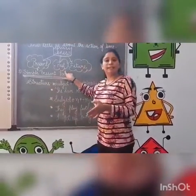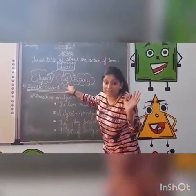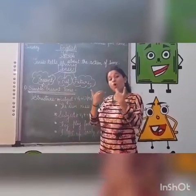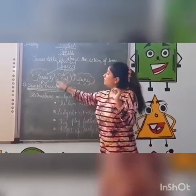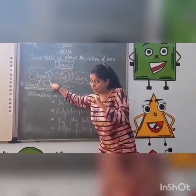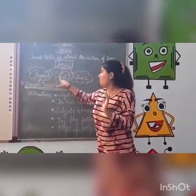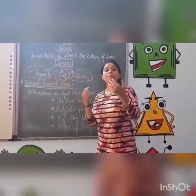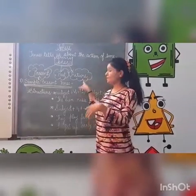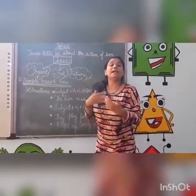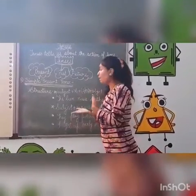Past tense tells us about the action which has already taken place — jo ho chuka hai. Jaise maam ne abhi pizza khaya — it means right now. Past: maam ne pizza khaya tha. Future tense ka matlab aane wale kaam se hai — it is about to happen. Future tense: maam kal pizza khayengi.